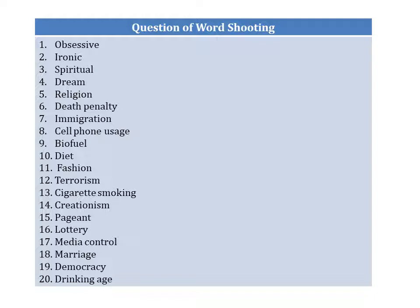Number one: obsessive. Number two: ironic. Number three: spiritual. Number four: dream. Number five: religion. Number six: death penalty. Number seven: immigration. Number eight: cell phone usage. Number nine: bio fuel. Number ten: diet. Number eleven: fashion. Number twelve: terrorism. Number thirteen: cigarette smoking. Number fourteen: creationism. Number fifteen: pageant. Number sixteen: lottery. Number seventeen: media control. Number eighteen: marriage. Number nineteen: democracy. Number twenty: drinking age.